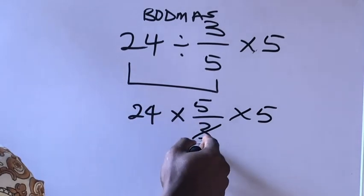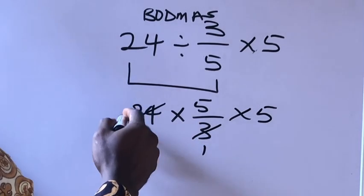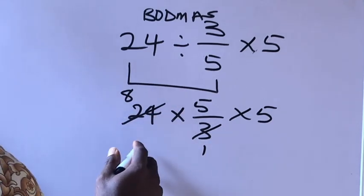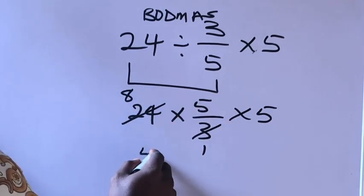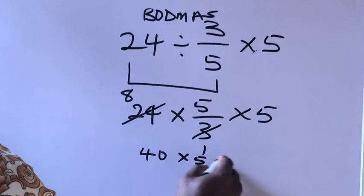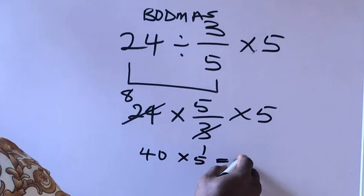24 divided by 3 here is equal to 8. So 8 times 5 will give us 40, times this 5 which is equal to 200.